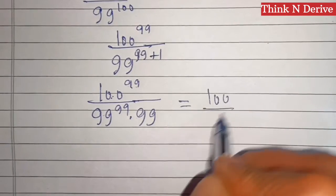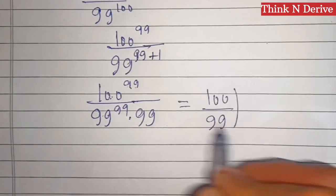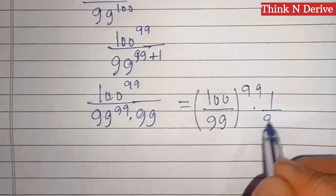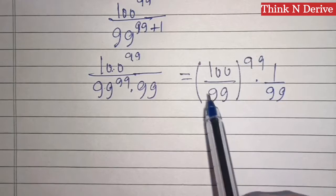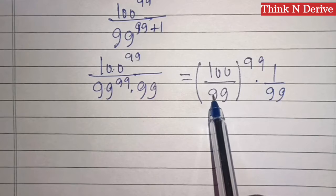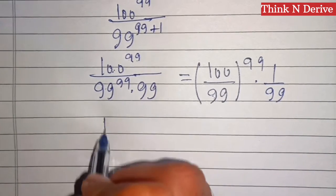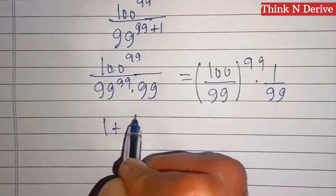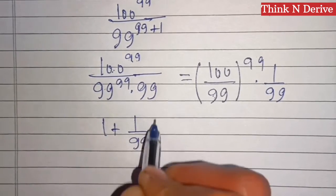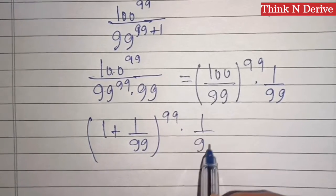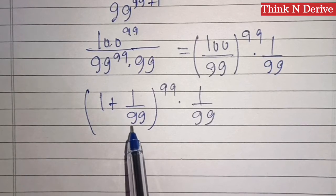The denominator is 1 less than 100, so we'll write this as (1 + 1/99)^99 times 1/99. Here, this denominator 99 and the exponents are the same, so we'll apply a formula.